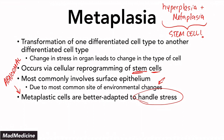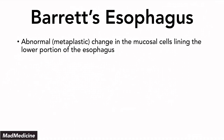One example of metaplasia you need to know is Barrett's esophagus. This is very important because it comes up on exams. Barrett's esophagus is the abnormal — or metaplastic — change in the mucosal lining of the lower portion of the esophagus.